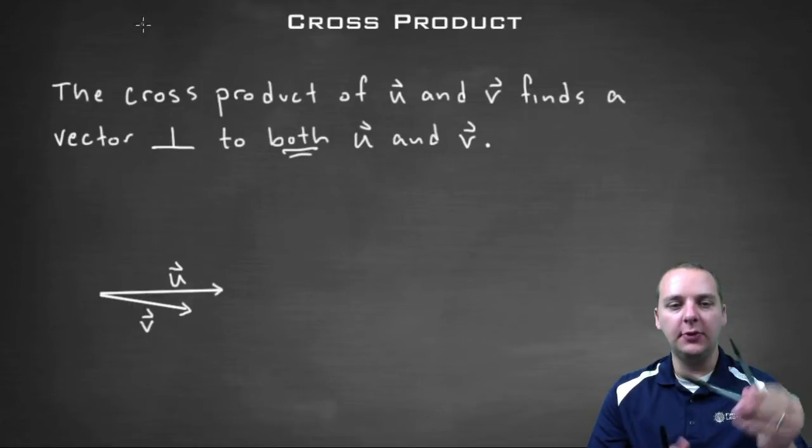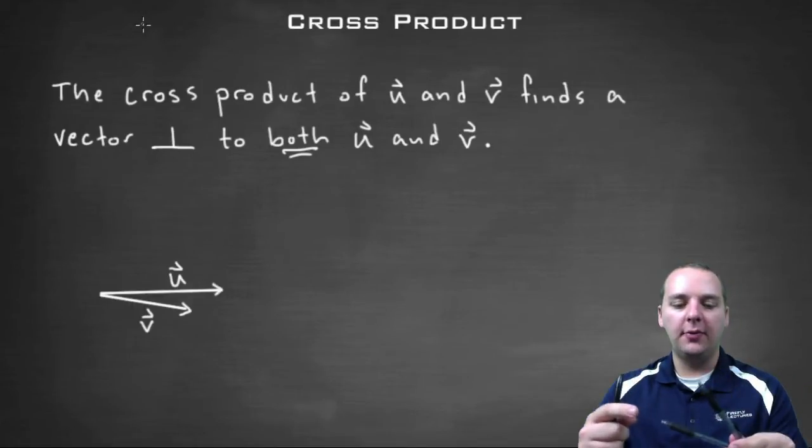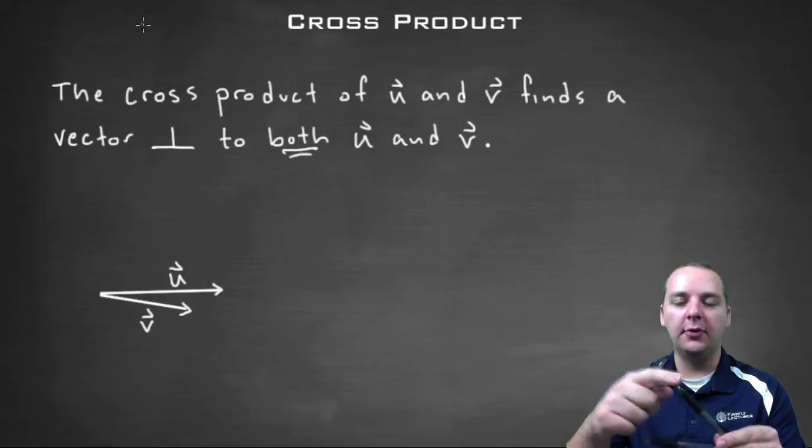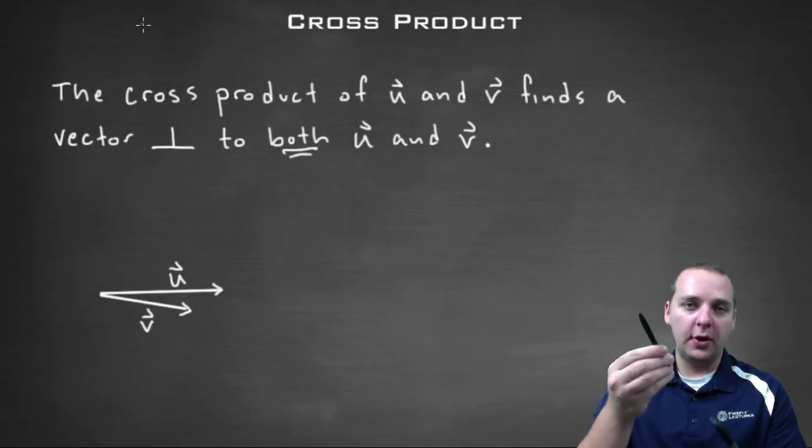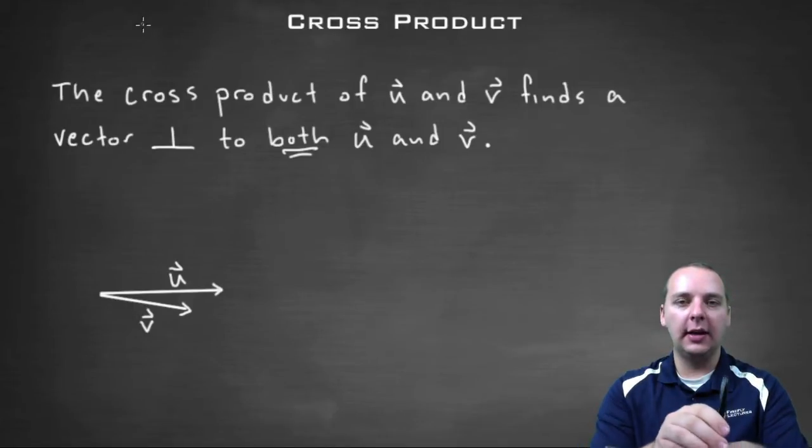So for example, let's say you have vector u and you have vector v or something like that, and you take their cross product. The cross product is going to look something kind of like this.